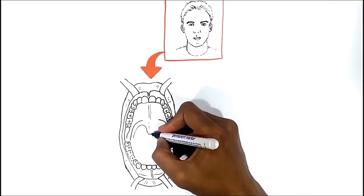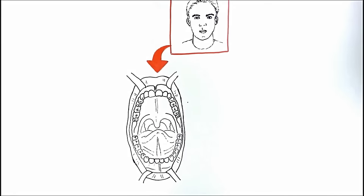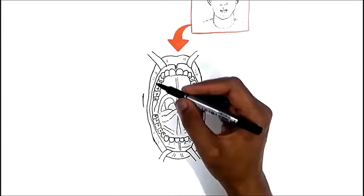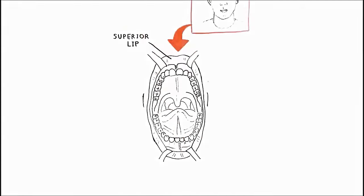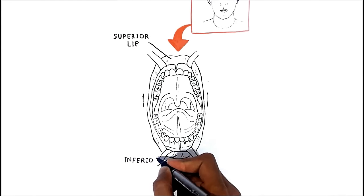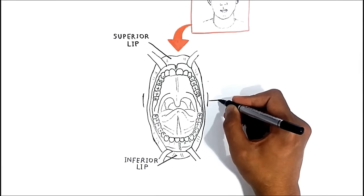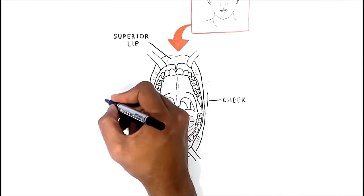Talking about the borders, it is important to know that the oral cavity is bound by both lips anteriorly and the cheeks laterally.